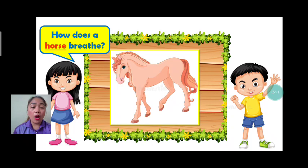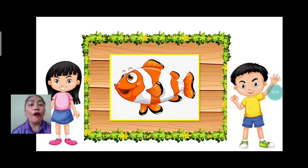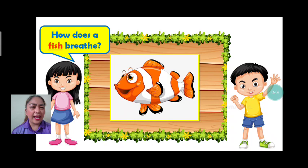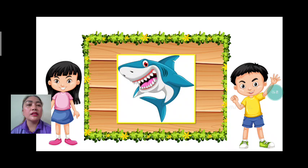Next we have horse. Question: how does a horse breathe? A horse breathes by their lungs. Again: a horse breathes by their lungs. Very good. Next we have fish. How does a fish breathe? A fish breathes by their gills. One more time: a fish breathes by their gills. Very good.